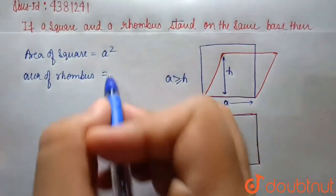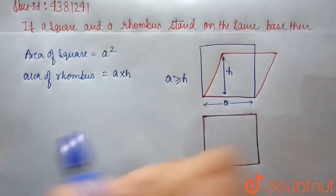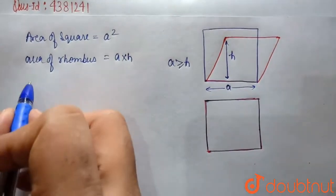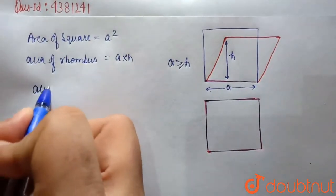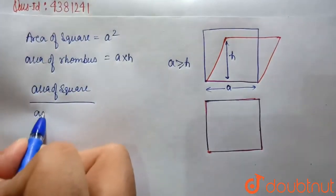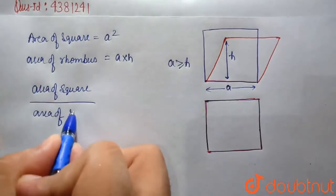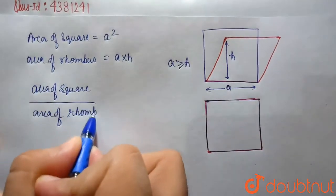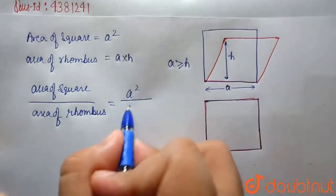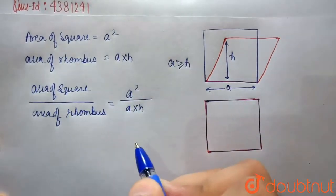And area of rhombus? Base into perpendicular. What was the ratio? Area of square by area of rhombus equals A squared upon A into H.